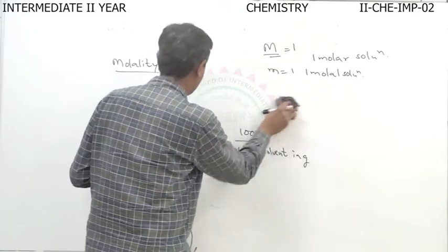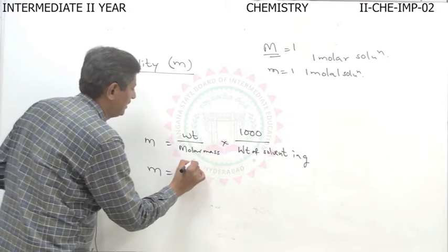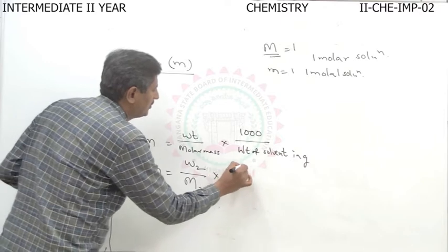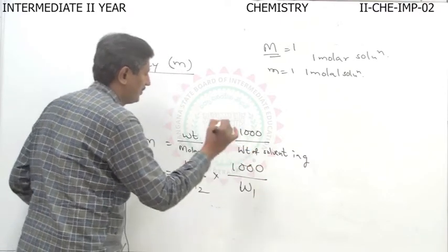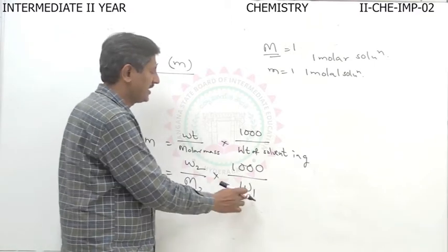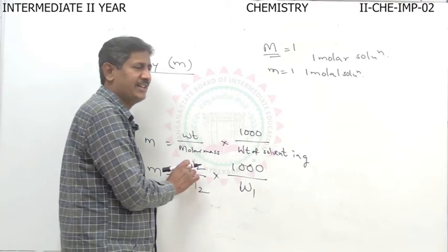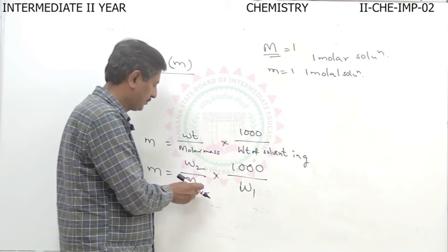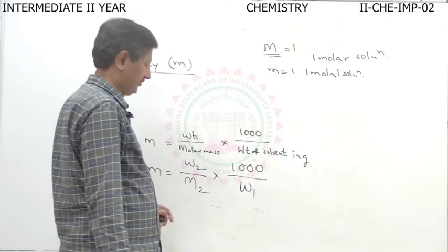This is also written as W2 divided by M2, multiplied by 1000. Always, subscript 2 stands for solute and subscript 1 stands for solvent. W2 is the weight of solute and capital M2 indicates the molar mass or molecular weight of the solute.